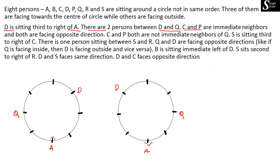The next information is: C and P are immediate neighbors and both are facing opposite directions. So C and P are immediate neighbors to each other, and both are facing opposite directions — meaning if one person is facing center, the other person will be facing outward. So if one person is facing center, the other has to face the opposite direction.